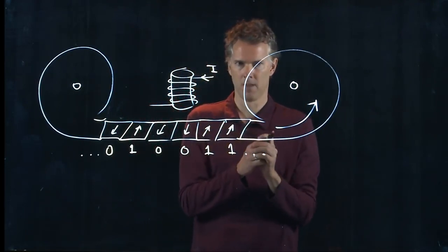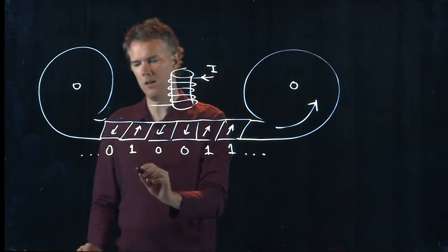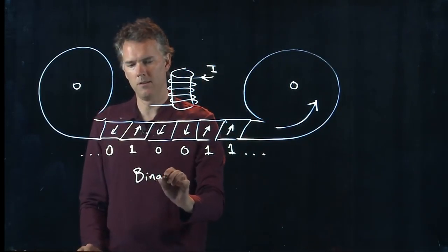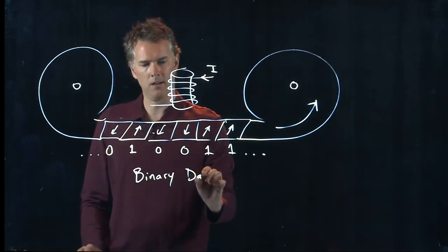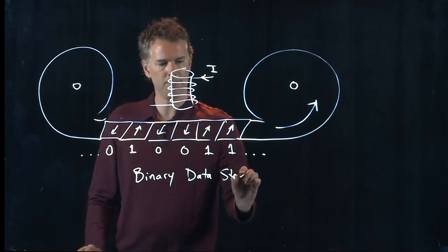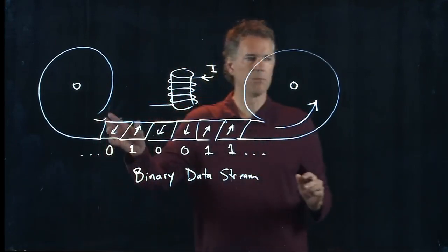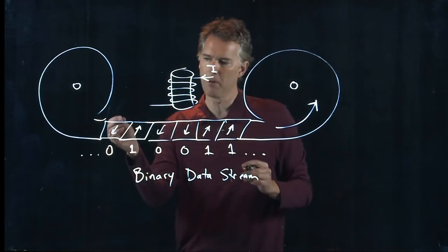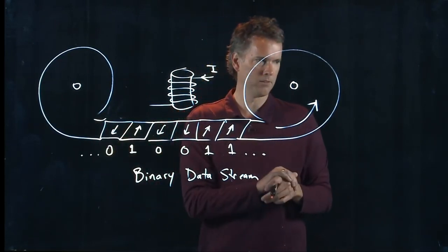What's that? Yeah, this is a binary data stream, right? Here comes our set of bits. These are bits, zeros and ones coming at us.